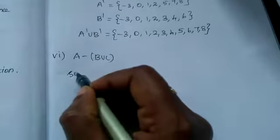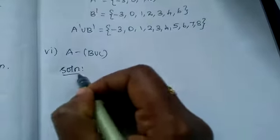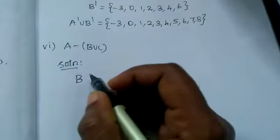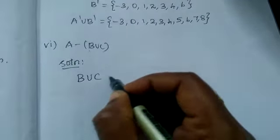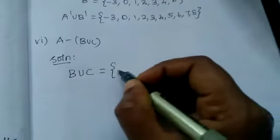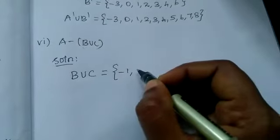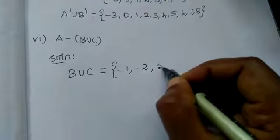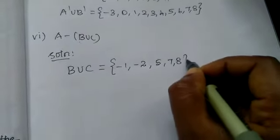In the same manner, next we are going to find A difference (B union C). First we want to find B union C. Now B values are what? Minus 1, minus 2, 5, 7, 8. Union.